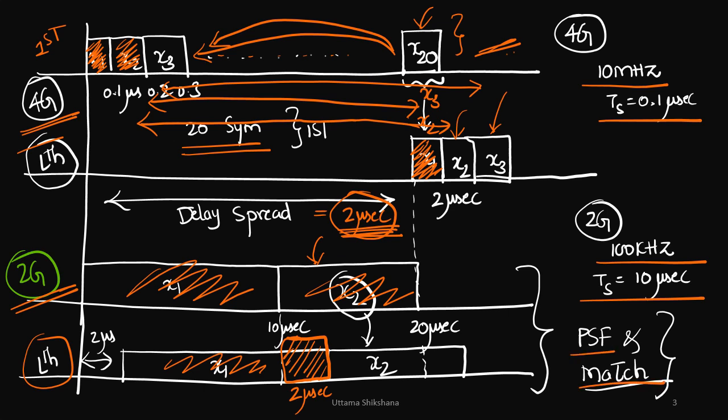Even these two filters are used to eliminate the ISI for few symbols, but definitely it is very difficult to design such filters when there is a interference from more number of symbols as we had seen in 4G. So definitely 4G needed a different kind of a strategy in order to overcome this severe ISI.